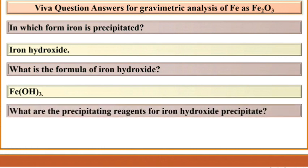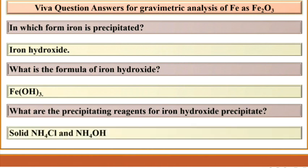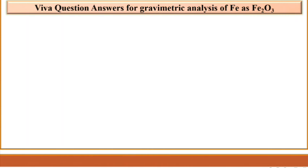What are the precipitating reagents for the iron hydroxide precipitate? The precipitating reagents are solid NH₄Cl and NH₄OH.